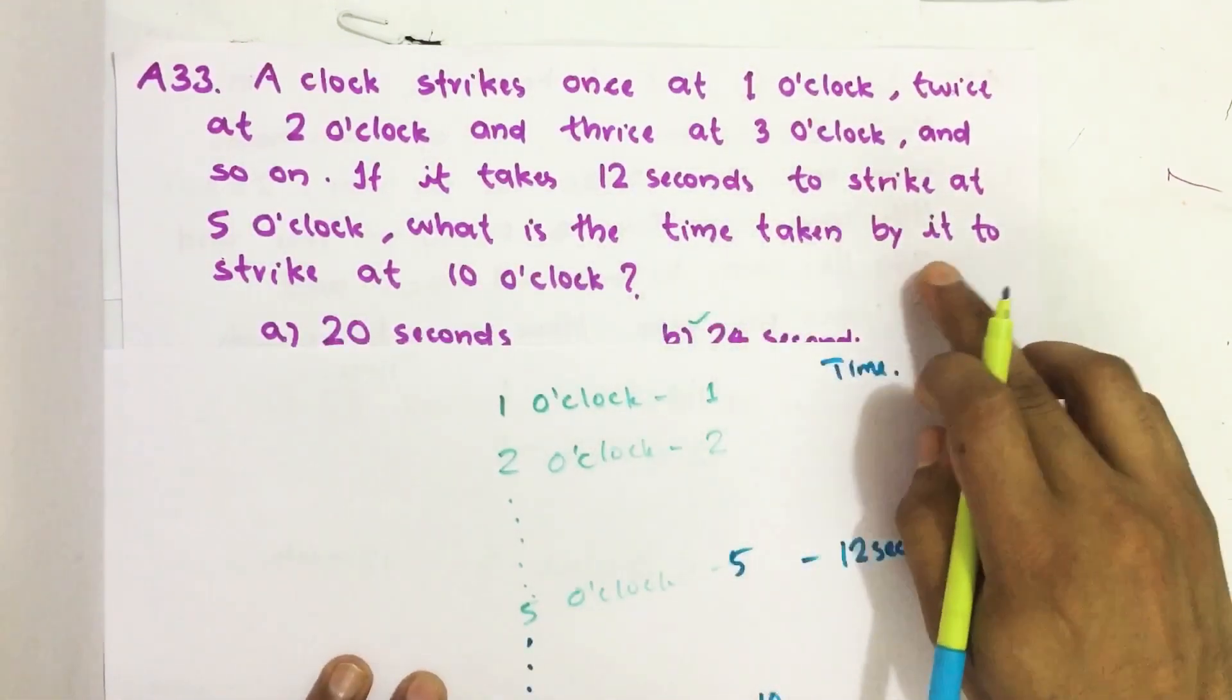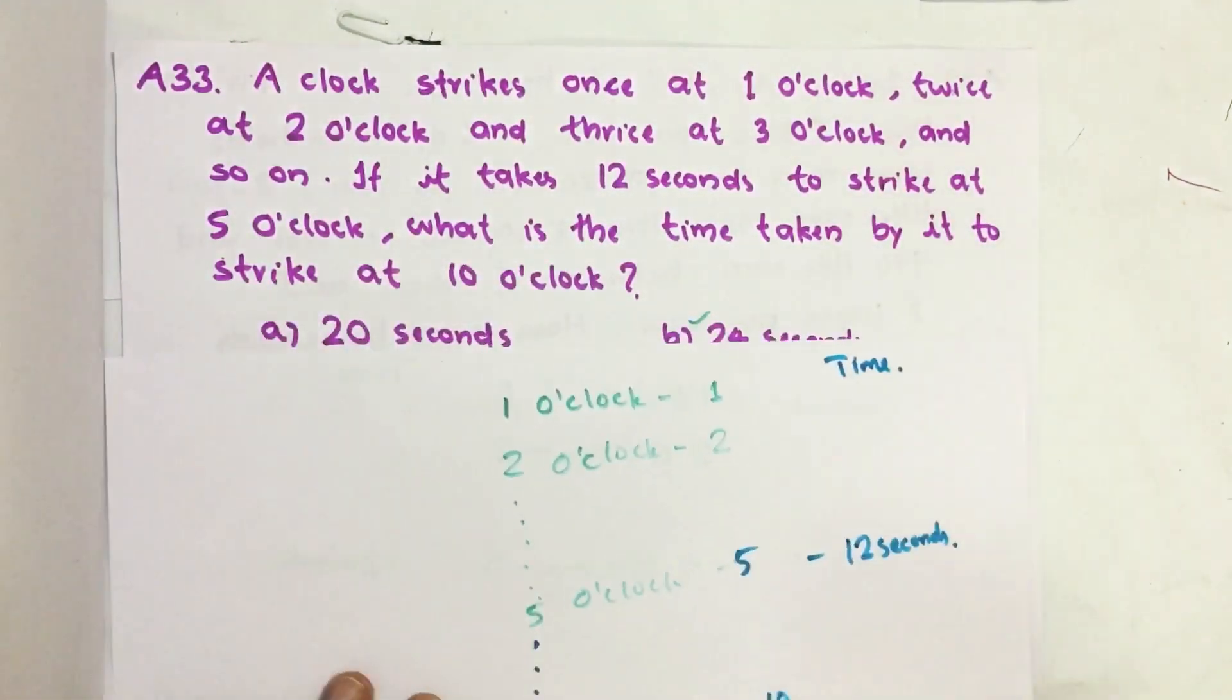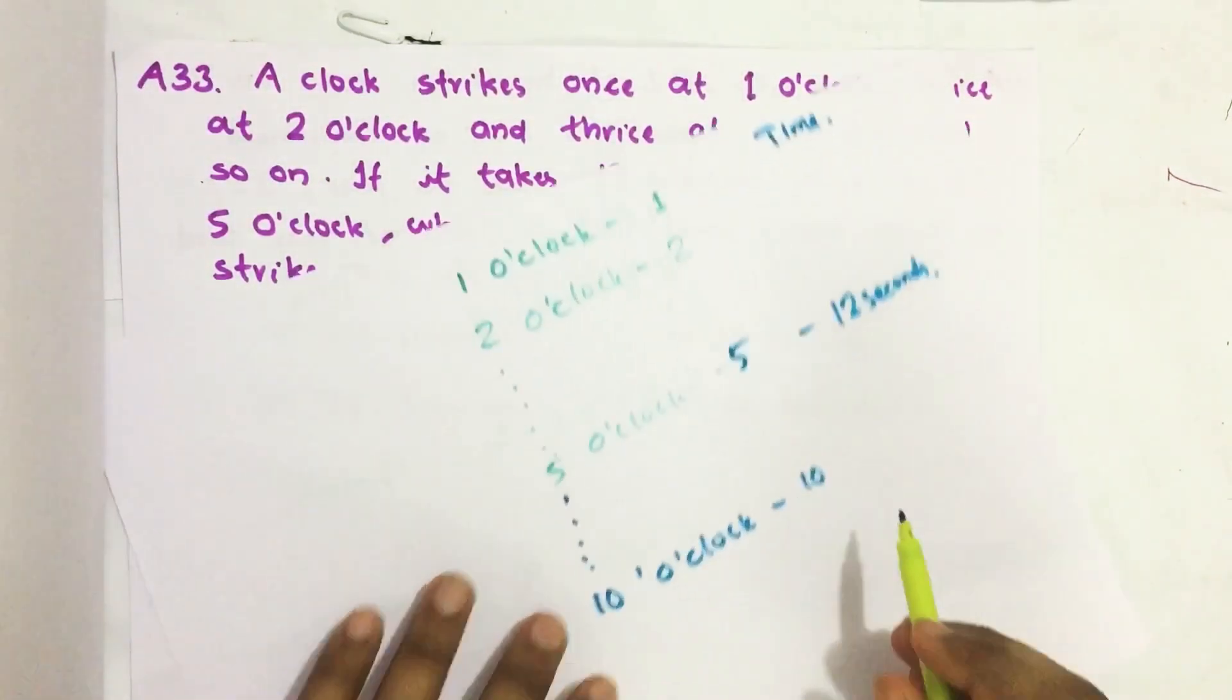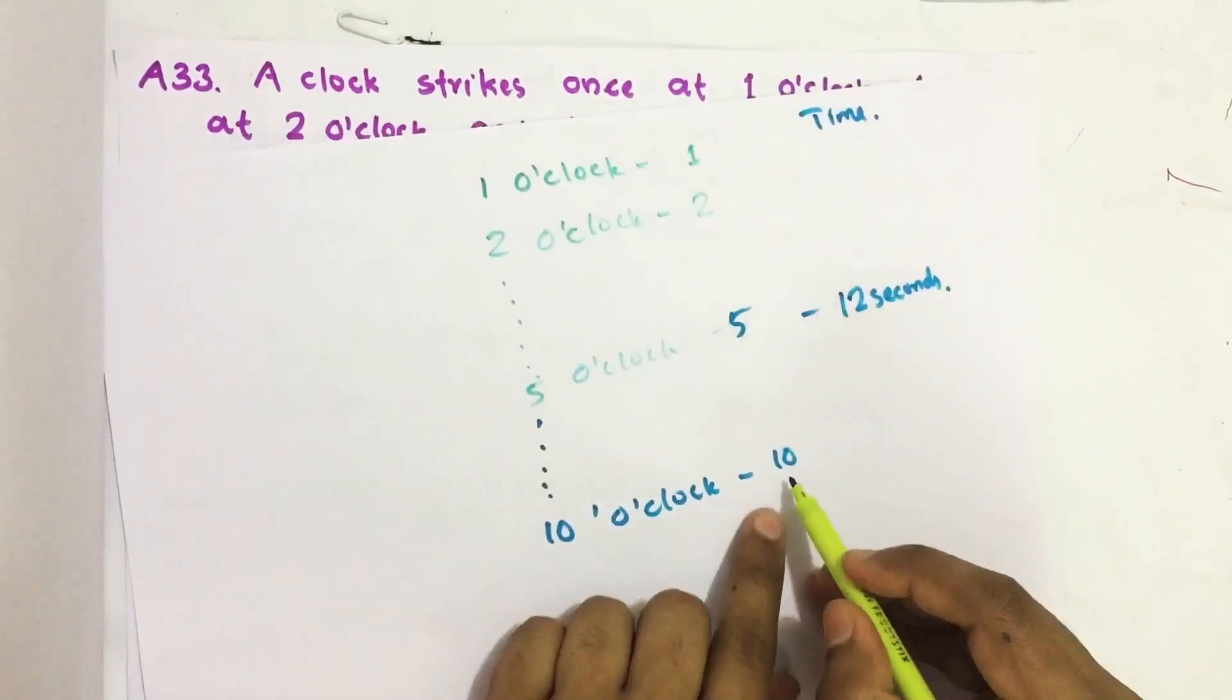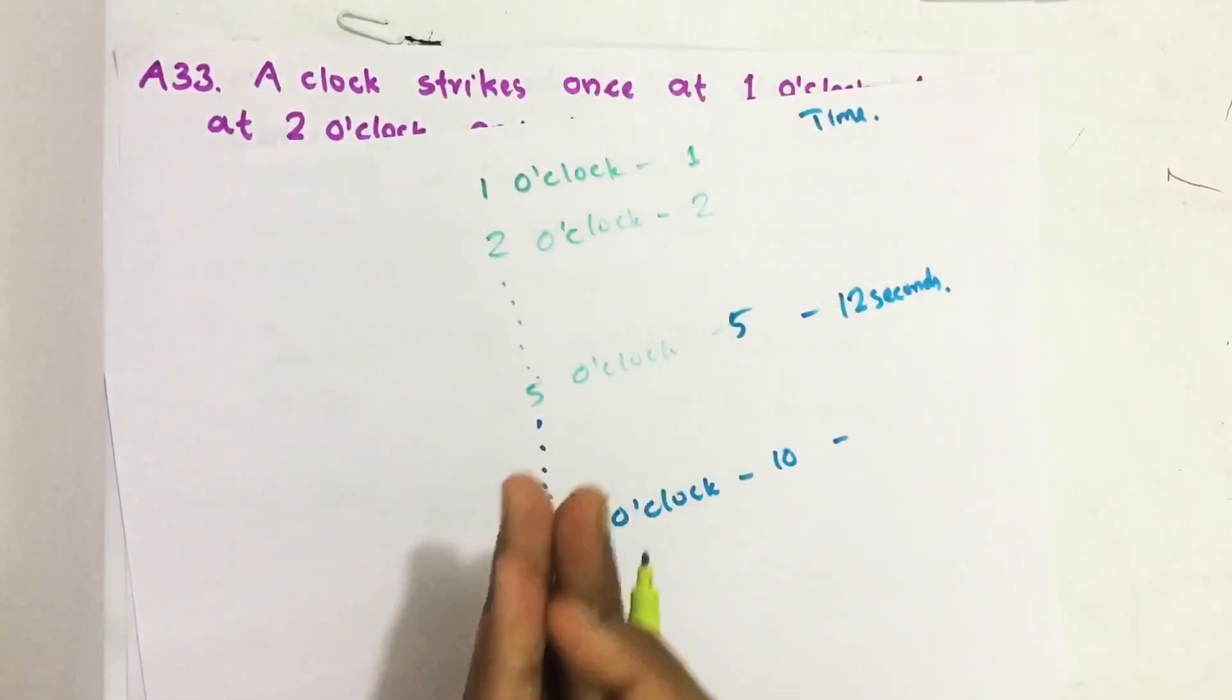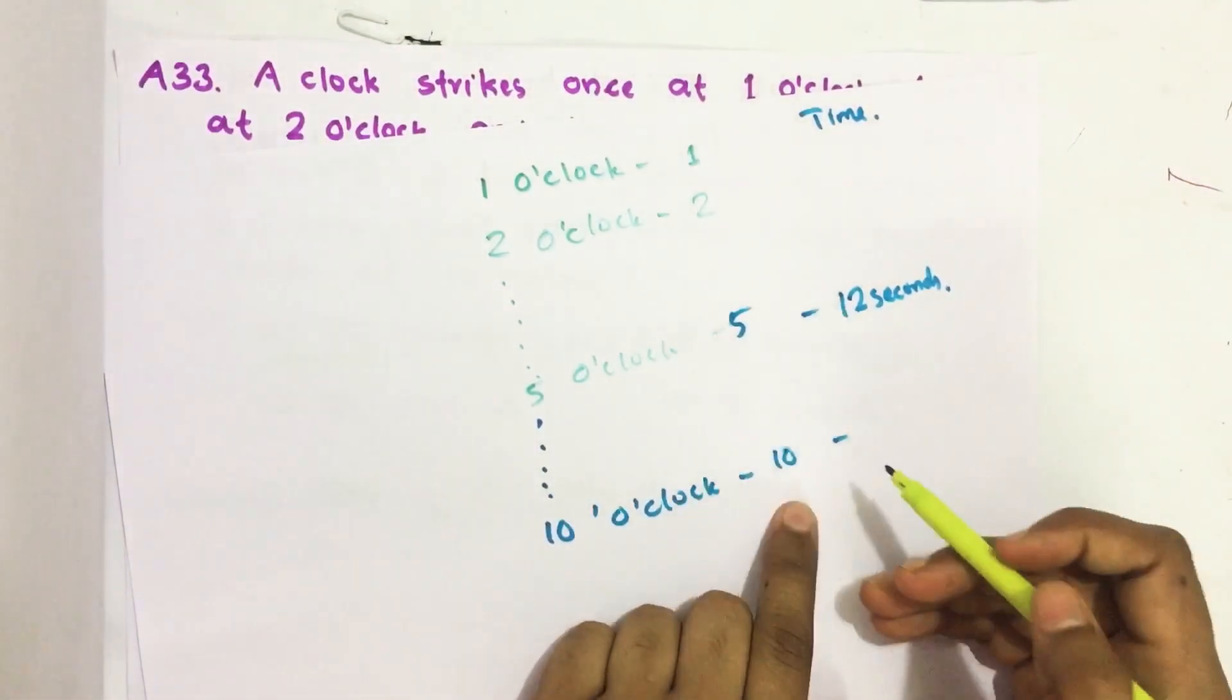Then what is the time taken by it to strike at 10 o'clock? We know it strikes 10 times at 10 o'clock. So what is the time taken to strike 10 times at 10 o'clock? That is what we have to find.